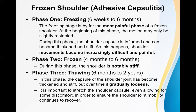Frozen shoulder has three phases — understanding these makes management easier. Phase one is the freezing phase, phase two is the frozen phase, and phase three is the thawing phase. The freezing phase involves acute inflammation and is the most painful phase. At the beginning, motion may only be slightly restricted, but later it becomes very painful. The frozen phase is the advanced stage where everything is already well developed.